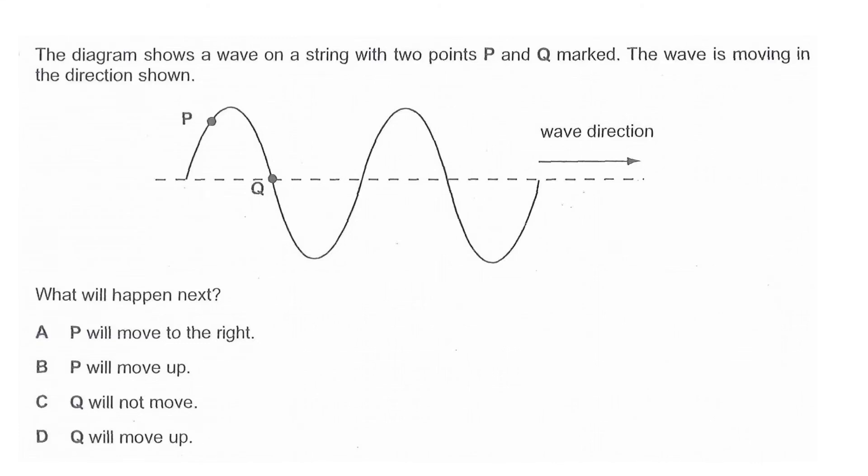In this question you have a transverse wave because it's a wave on a string, like a rope wave. There are two points P and Q, and the wave is moving in the direction shown, moving to the right.